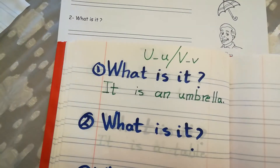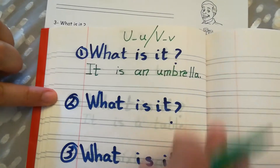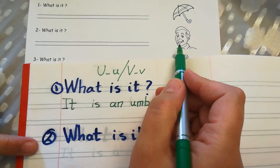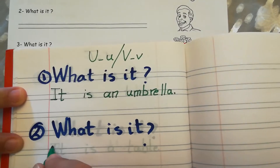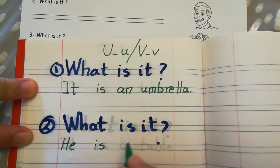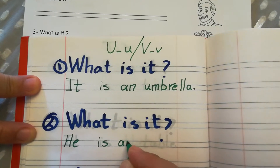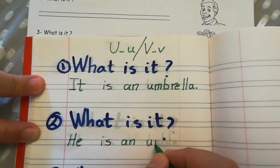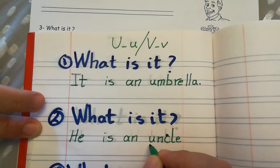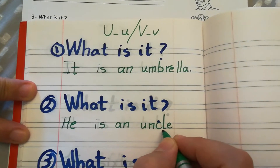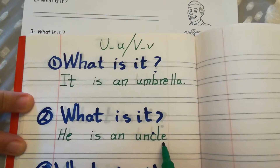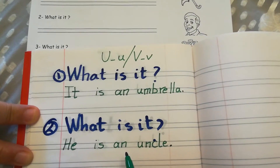Next, look at this picture. Uncle. He is an uncle. Let's write — do you remember how to write 'he'? H, E. He is an uncle: A, U, N, C, L, E. Uncle. Again: U, N, C, L, E. Uncle. He is an uncle.